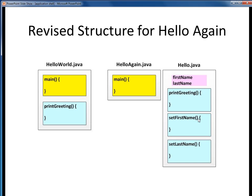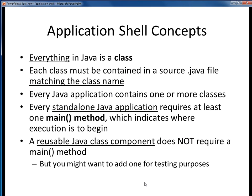The Hello class was intended to be a reusable component, which is why it didn't need its own main. So just by way of review, everything in Java is a class, and that class lives in a .java file with the same name as its class. Every Java application requires at least one class, and somewhere within that application, at least one of those classes must have a main method, because the JVM needs to know where to start executing the program. Only the main application class needs to have that main method. If a class is a reusable Java component, then it doesn't need to have any main method inside it.